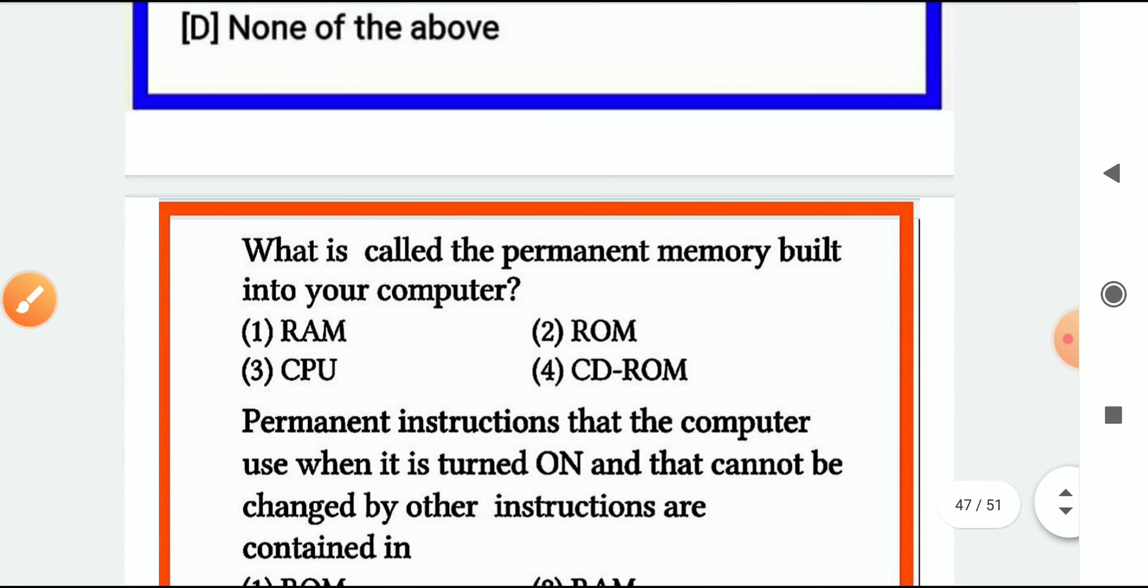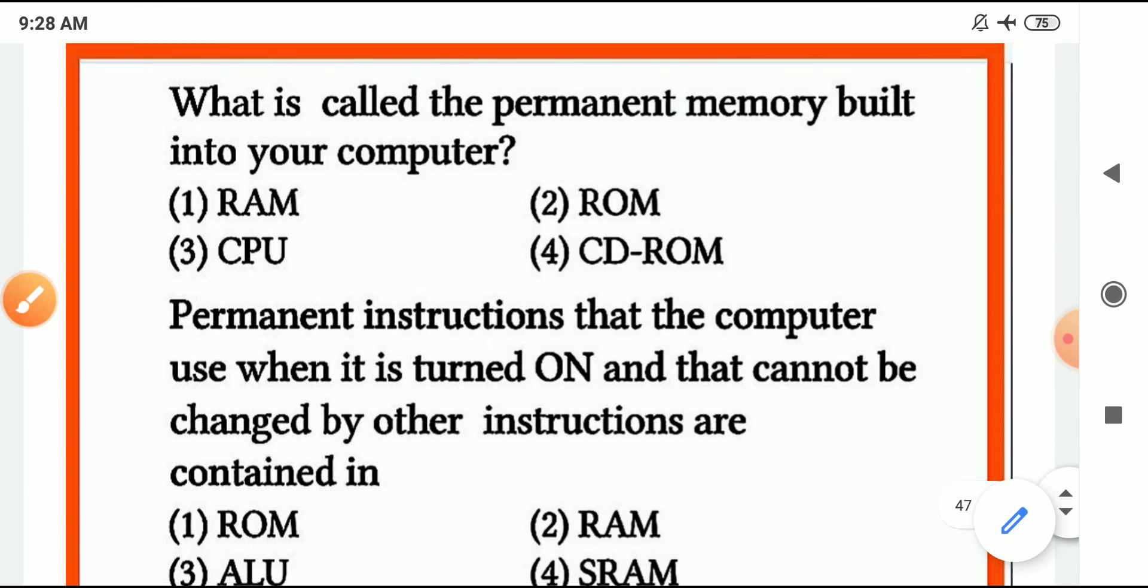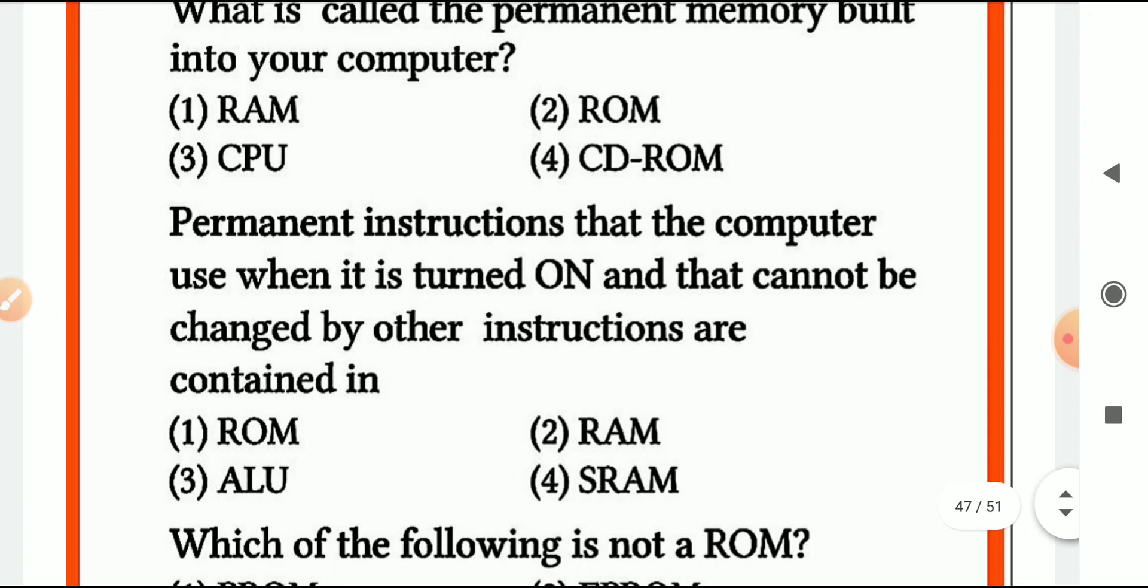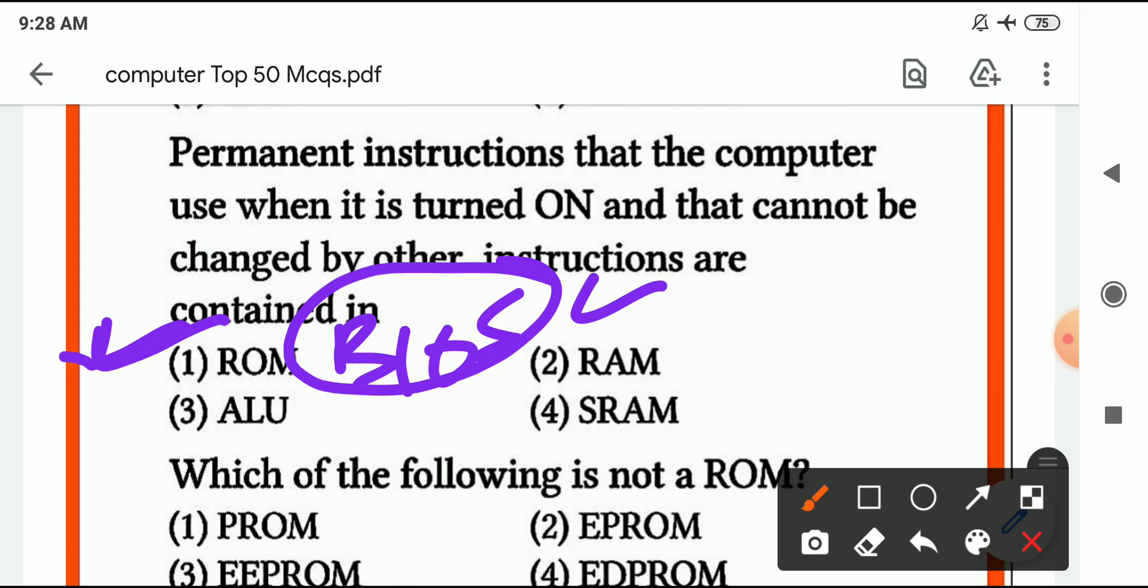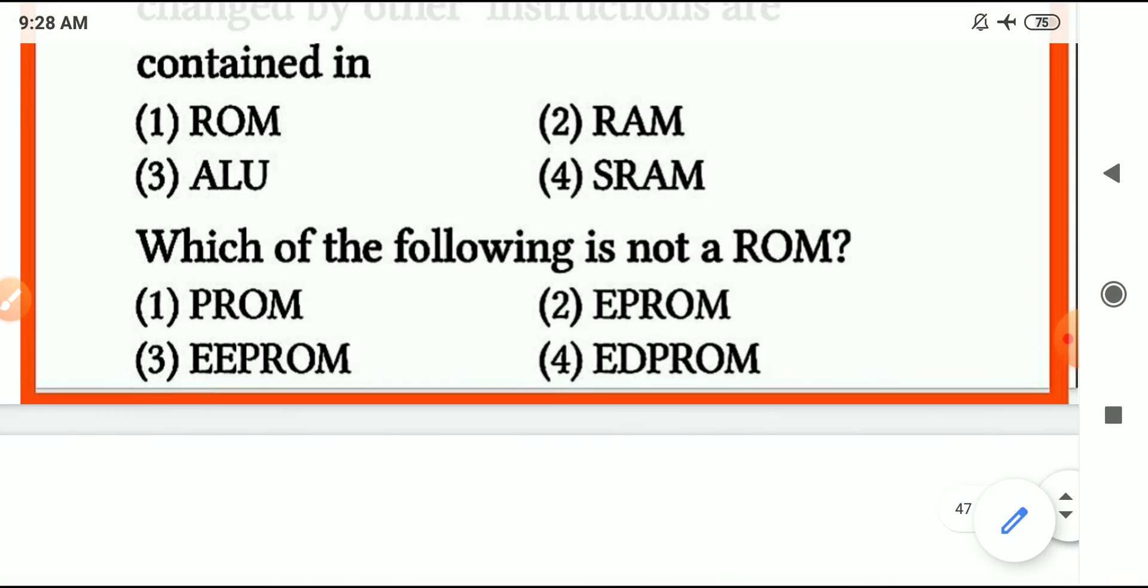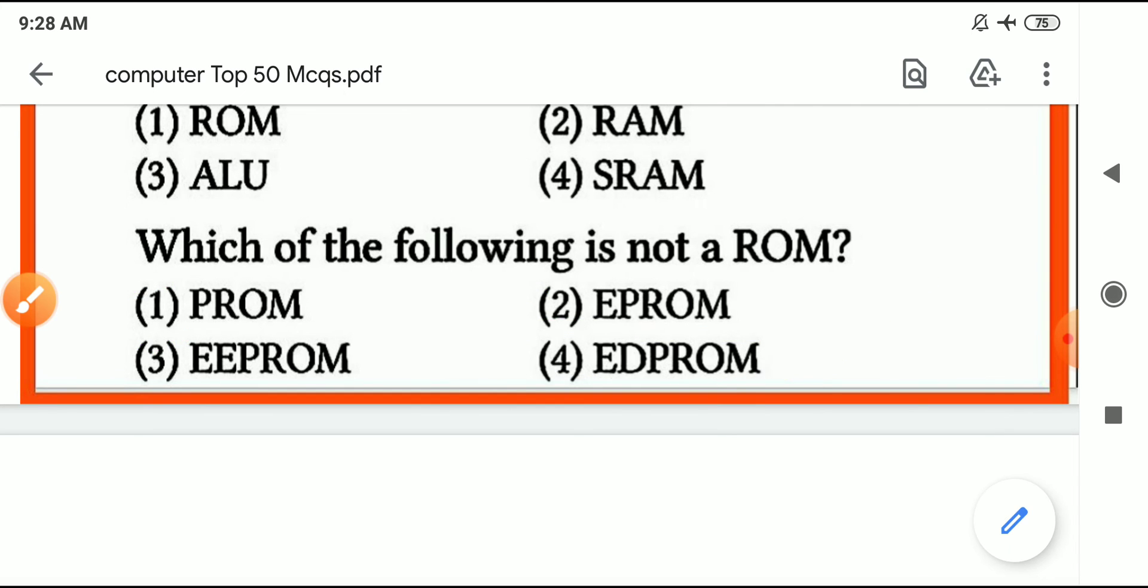Which is called permanent memory built in your computer? Permanent memory is ROM. Permanent instructions that a computer uses to turn on cannot be changed - that is ROM. Which of the following is not a ROM? ROM types are PROM, EPROM, and EEPROM. EDPROM is not a type of ROM.